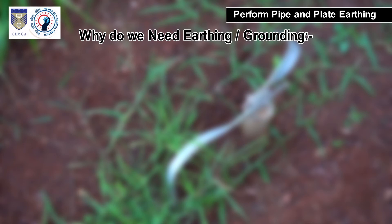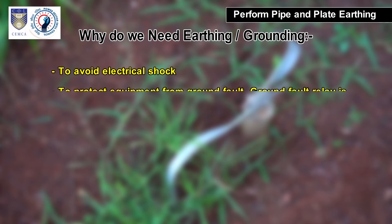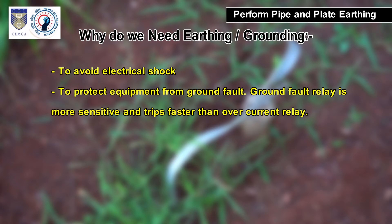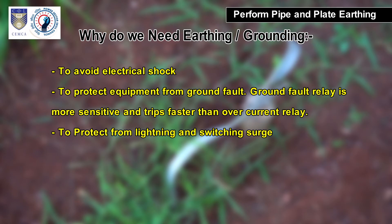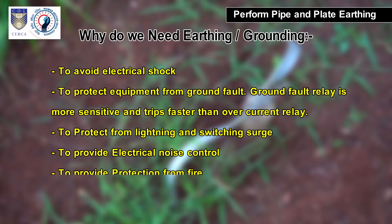Why do we need earthing or grounding? To avoid electrical shock. To protect equipment from ground fault. Ground fault relay is more sensitive and trips faster than an overcurrent relay. To protect from lightning and switching surge. To provide electrical noise control and protection from fire. To reduce arc flash hazards.